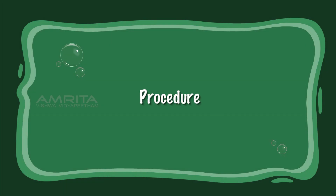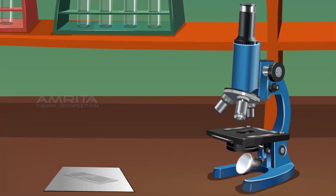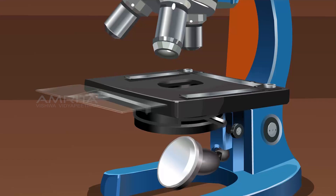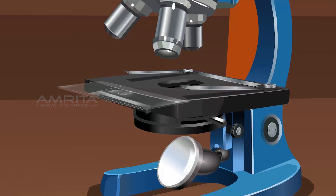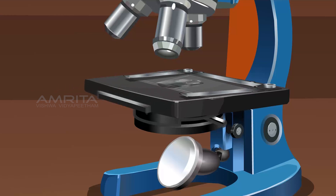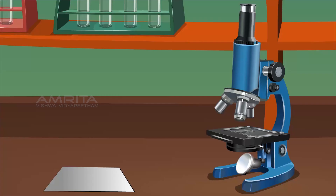Procedure: Place the prepared slide of parenchyma tissue on the stage of the compound microscope. Observe the features of the parenchyma tissue through the lens of the compound microscope.